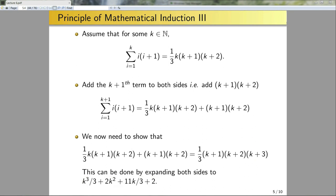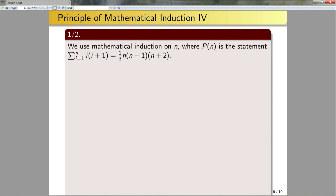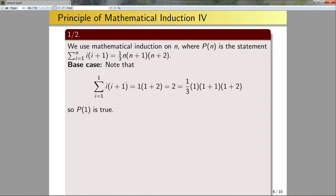Since I'll be asking you to formally use mathematical induction, let's write the formal proof and go through the structure I want you to use. We use mathematical induction on n, where P(n) is the summation statement. You must formally define what P(n) is in your proof. For the base case, we simply note the sum from i=1 to 1 equals the expression which equals the right-hand side — thus P(1) is true.